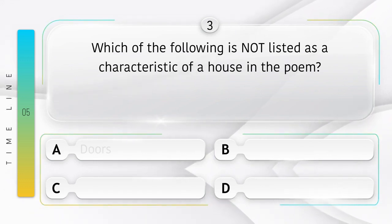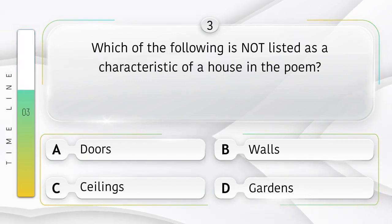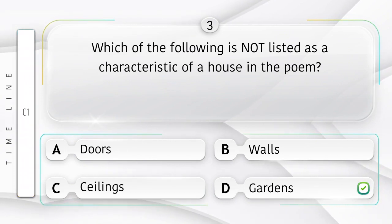Options are A. Doors, B. Walls, C. Ceilings, D. Gardens. Answer is option D, Gardens.